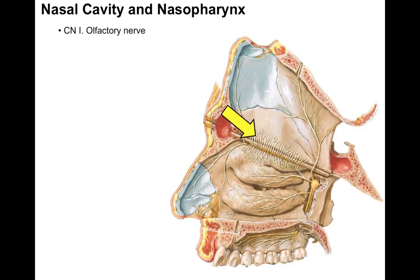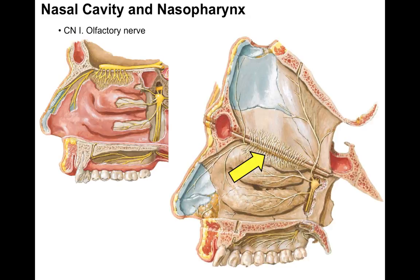Coming into the nasal cavity is cranial nerve 1 — the olfactory nerve, which is for smell. There are different branches coming to the nasal septum and the lateral nasal wall. In the sagittal section, there's the olfactory bulb and tract. They send fibers through the cribriform foramina of the ethmoid bone. There we see those olfactory nerves coming into the top of the nasal cavity — olfactory nerve, special sensation, smell.